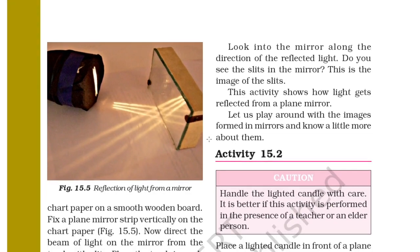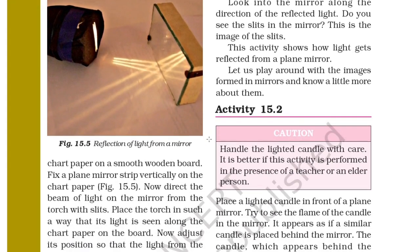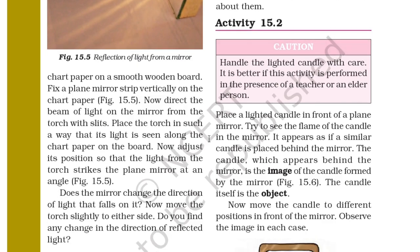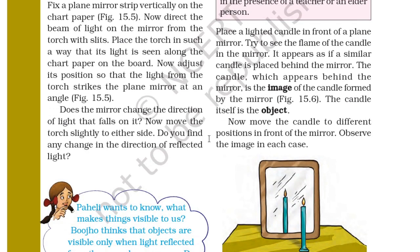Let us play around with the image formed in a mirror in Activity 15.2. A word of caution: handle the lighted candle with care, and it is better if this activity is performed in the presence of a teacher or an elder person. Place the lighted candle in front of a plain mirror and try to see the flame of the candle in the mirror. It appears as if a similar candle is placed behind the mirror — that is the image of the candle formed by the mirror. The candle itself is the object.